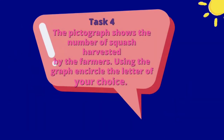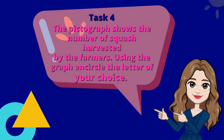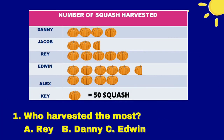Learning task number 4: The pictograph shows the number of squash harvested by the farmers. Using the graph, encircle the letter of your choice. The title is Number of Squash Harvested, and the key shows that 1 squash picture is equal to 50 squash.